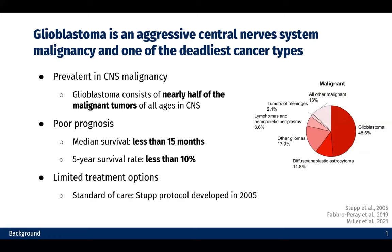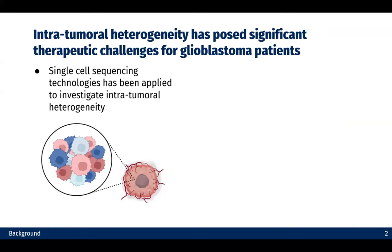Glioblastoma is one of the very aggressive central nervous system malignancies, and is known for its poor prognosis, with median survival less than 15 months and five-year survival rate less than 10%. There are very limited treatment options for glioblastoma patients, and we are still using the standard of care therapy that was developed almost 20 years ago to treat our current patients.